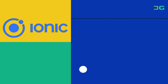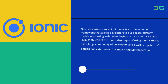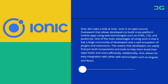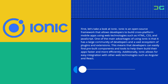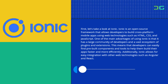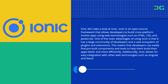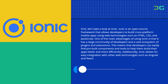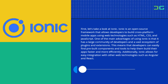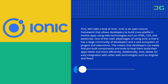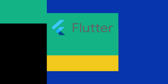First, let's take a look at Ionic. Ionic is an open-source framework that allows developers to build cross-platform mobile apps using web technologies such as HTML, CSS, and JavaScript. One of the main advantages of using Ionic is that it has a large community of developers and a vast ecosystem of plugins and extensions. This means that developers can easily find pre-built components and tools to help them build their apps faster and more efficiently. Additionally, Ionic allows for easy integration with other web technologies such as Angular and React.